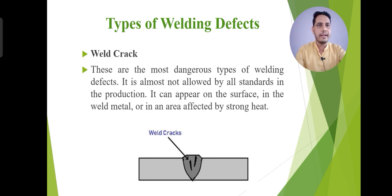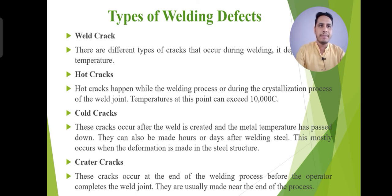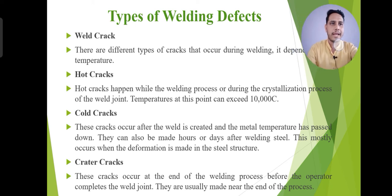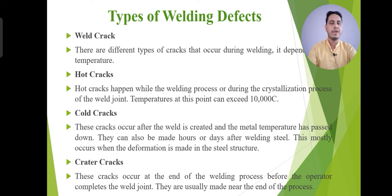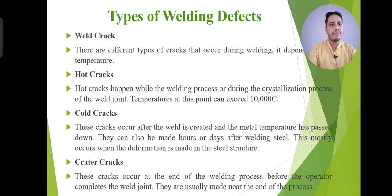Hot cracks and cold cracks are important types. Hot cracks happen during the welding process or during the crystallization process of the welding joint, at temperatures around 1000 degrees Celsius, and there is a chance of hot cracks due to thermal stresses. Cold cracks occur after the weld has been created and the metal temperature has come down. They can also develop hours or days after welding steels. It is not compulsory that cold cracks occur during the welding process — generally they develop after welding, and it may take more days or more hours. These cracks occur generally in welding steels.